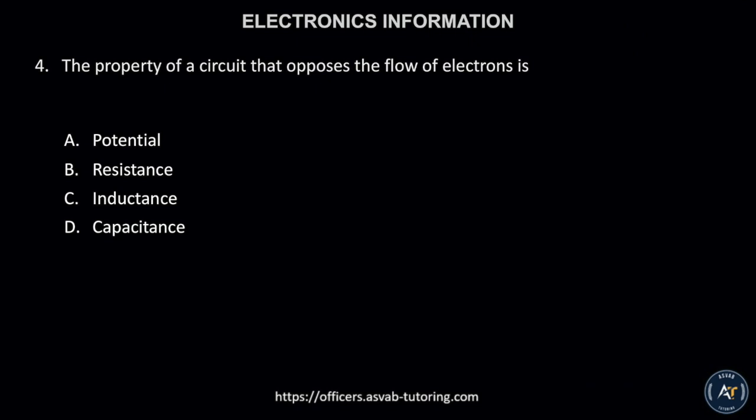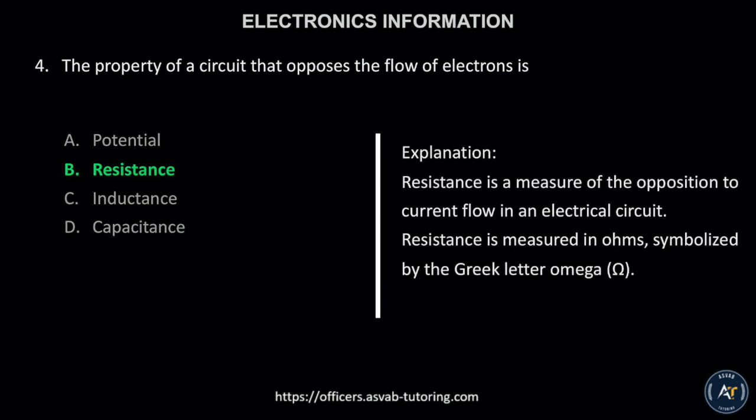Number 4. The property of a circuit that opposes the flow of electrons is: A. Potential, B. Resistance, C. Inductance, or D. Capacitance. The correct answer is letter B, resistance. Resistance is a measure of the opposition to current flow in an electrical circuit. Resistance is measured in ohms, symbolized by the Greek letter omega.